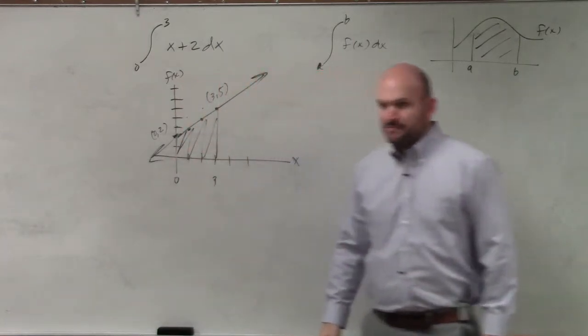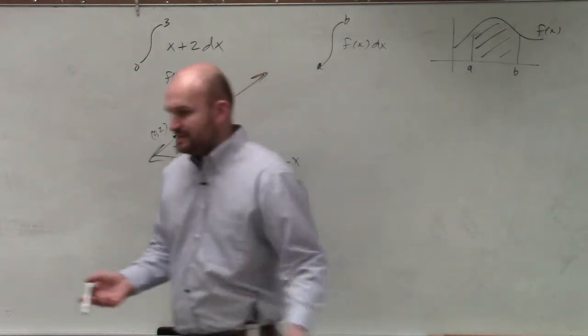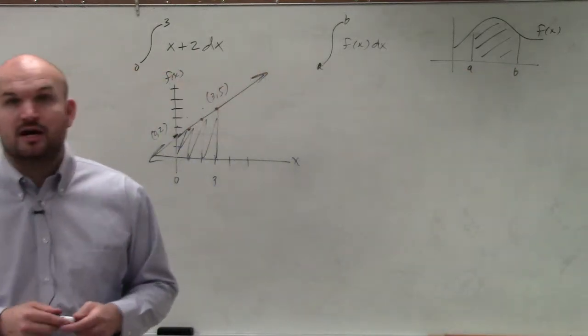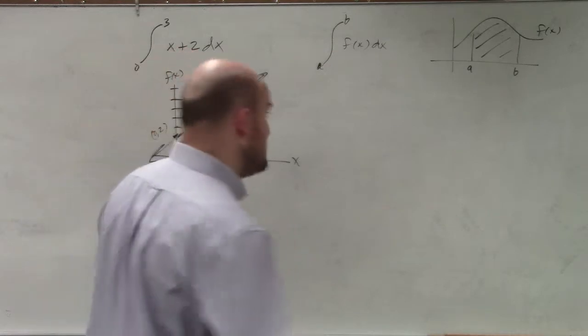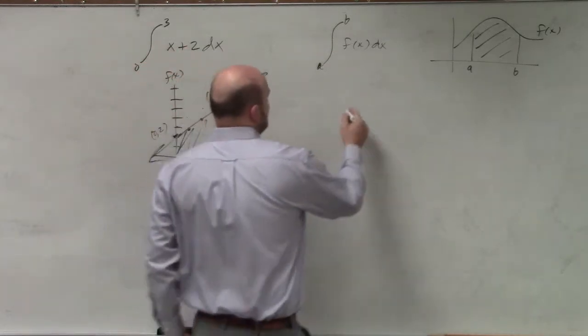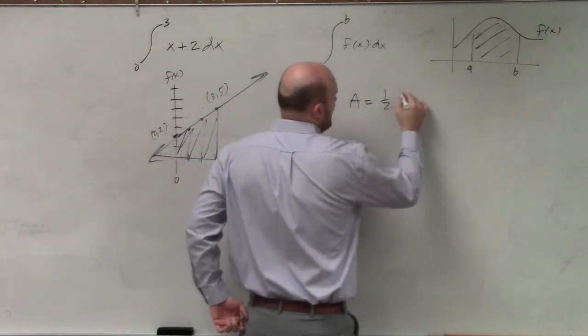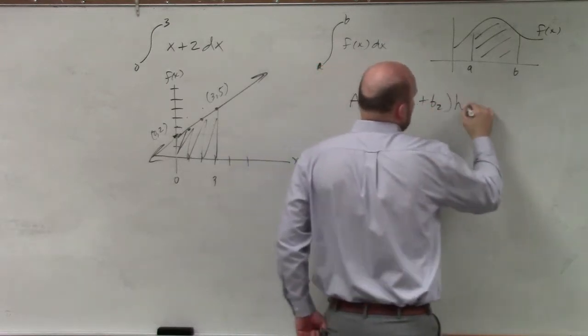Would everybody agree with me, right? But remember when we talked about the area of a trapezoid, which you guys can see this is a trapezoid. So the area formula: area equals 1 half base 1 plus base 2 times height.